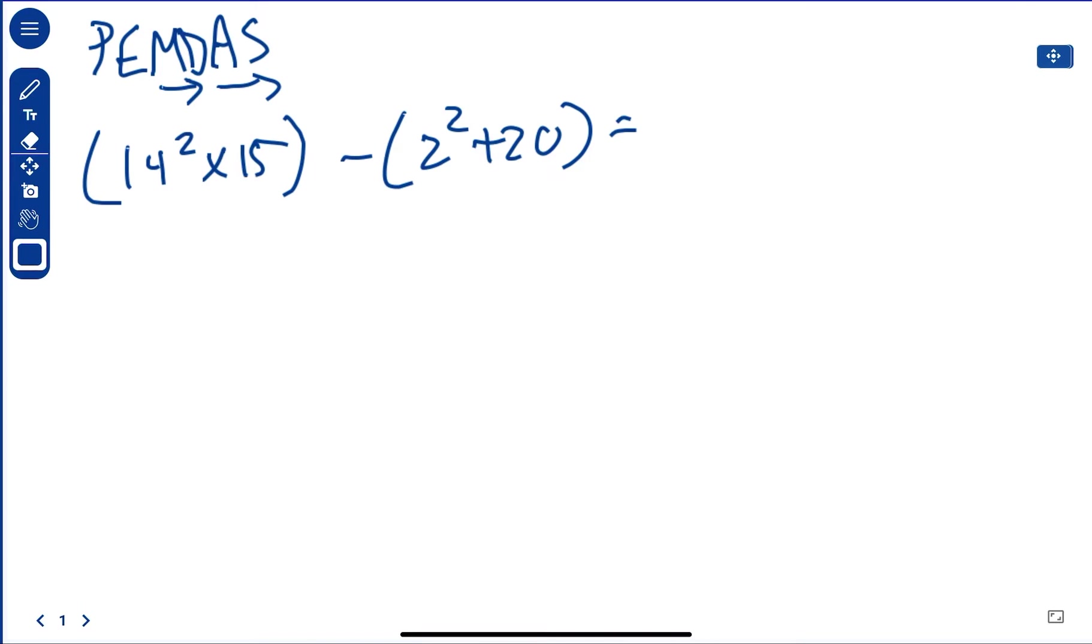So let's do this one. 14 squared is 196 times 15. And if we do 196 times 15, that's going to be, what is that, 196 times 15 is 2,940.